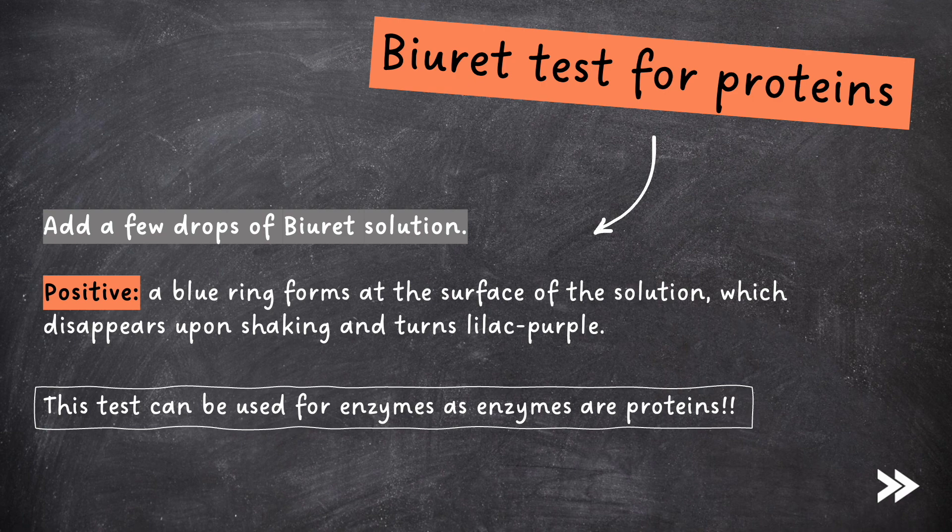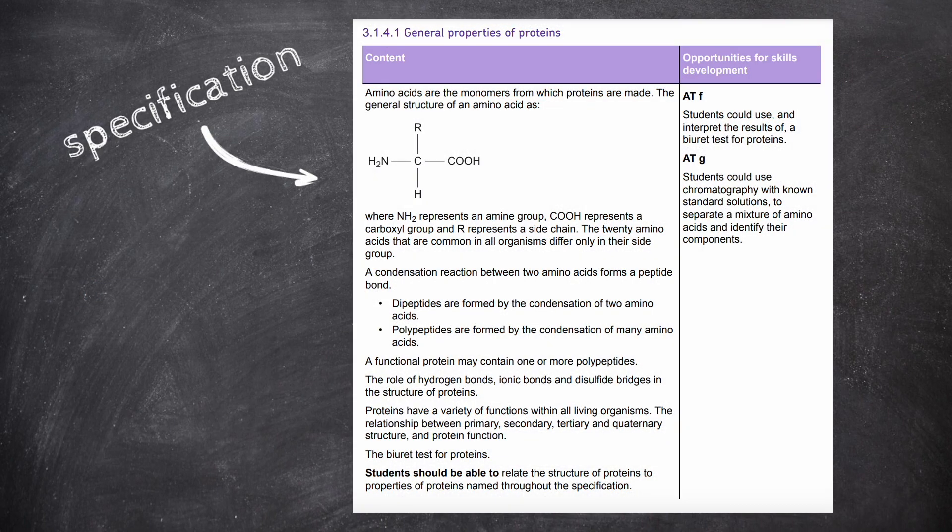Enzymes will be covered in my next video. Great, that would be the specification covered. We know that amino acids are the monomers from which proteins are made, and we have covered the general structure of amino acids. We have covered the formation of dipeptides and polypeptides, as well as protein structure. Finally, we have covered the biuret test for proteins.